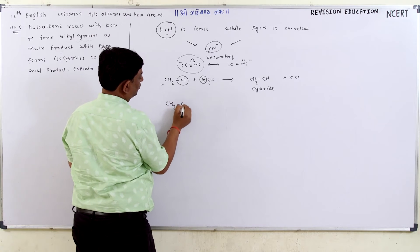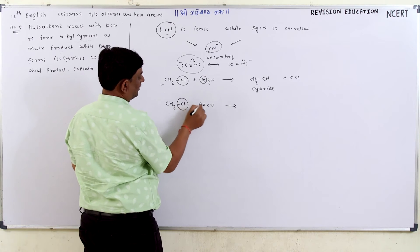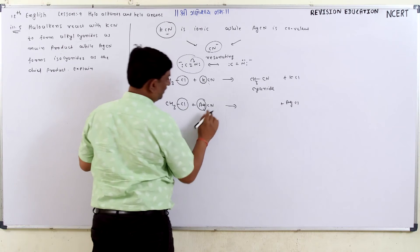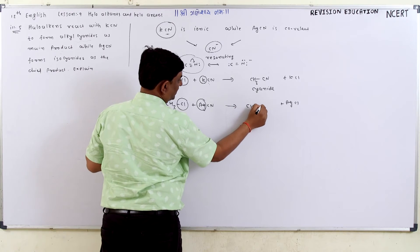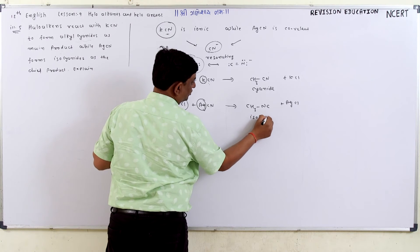So reacting with AgCl forms AgCl and what we call is called iso-cyanate.